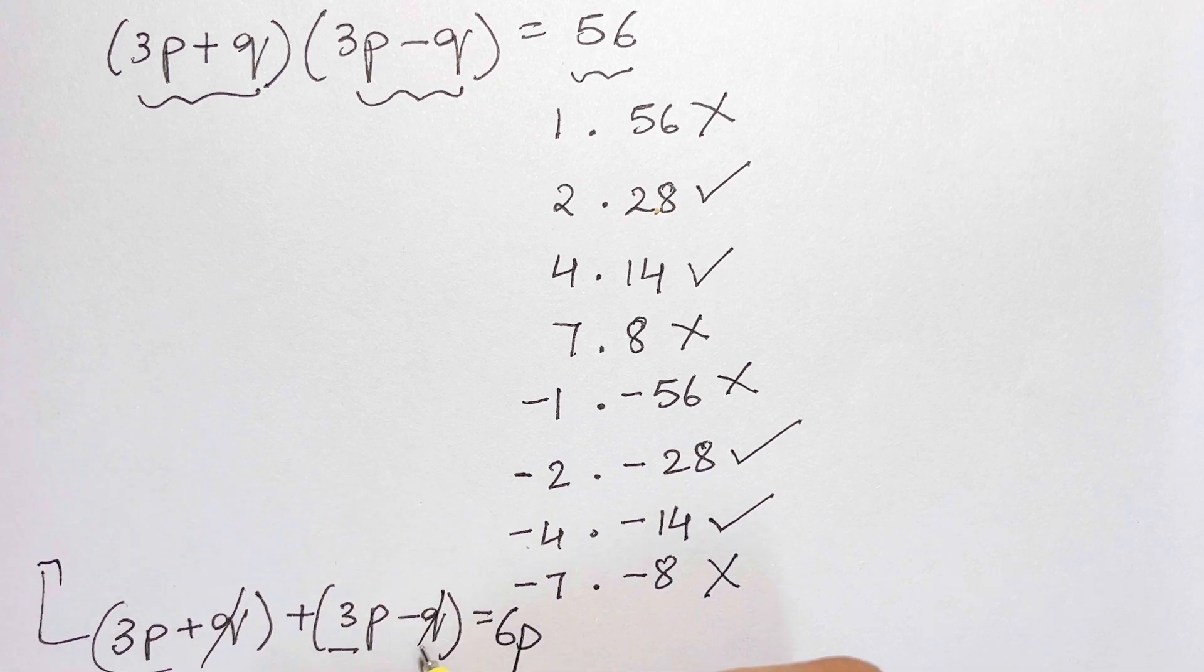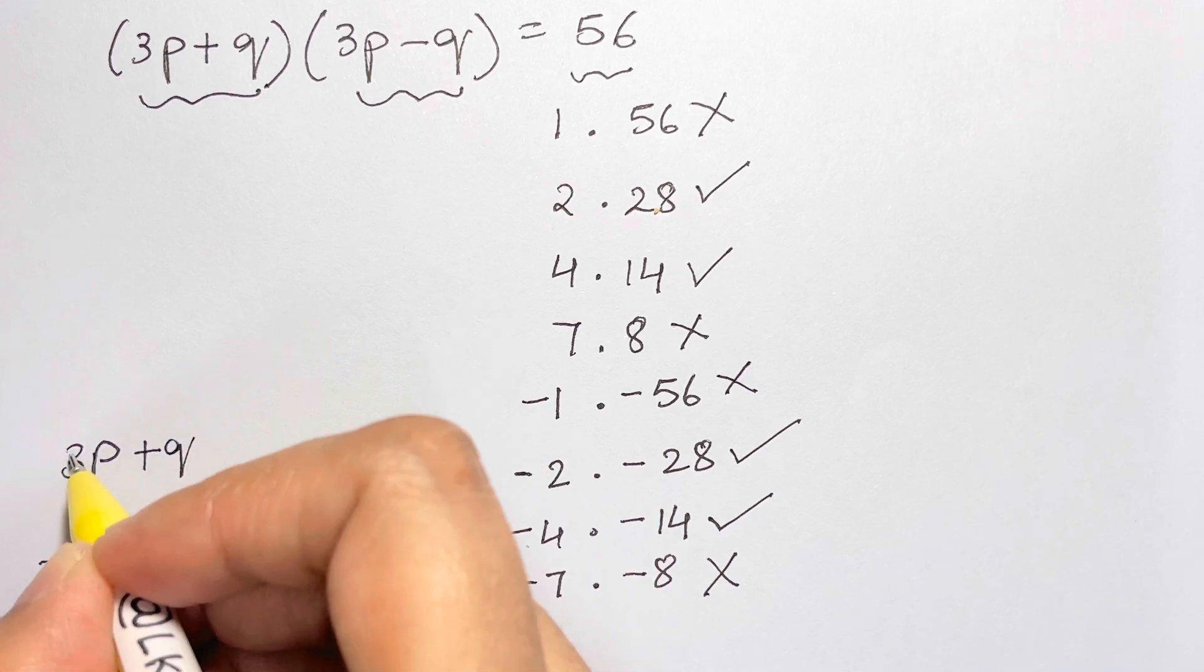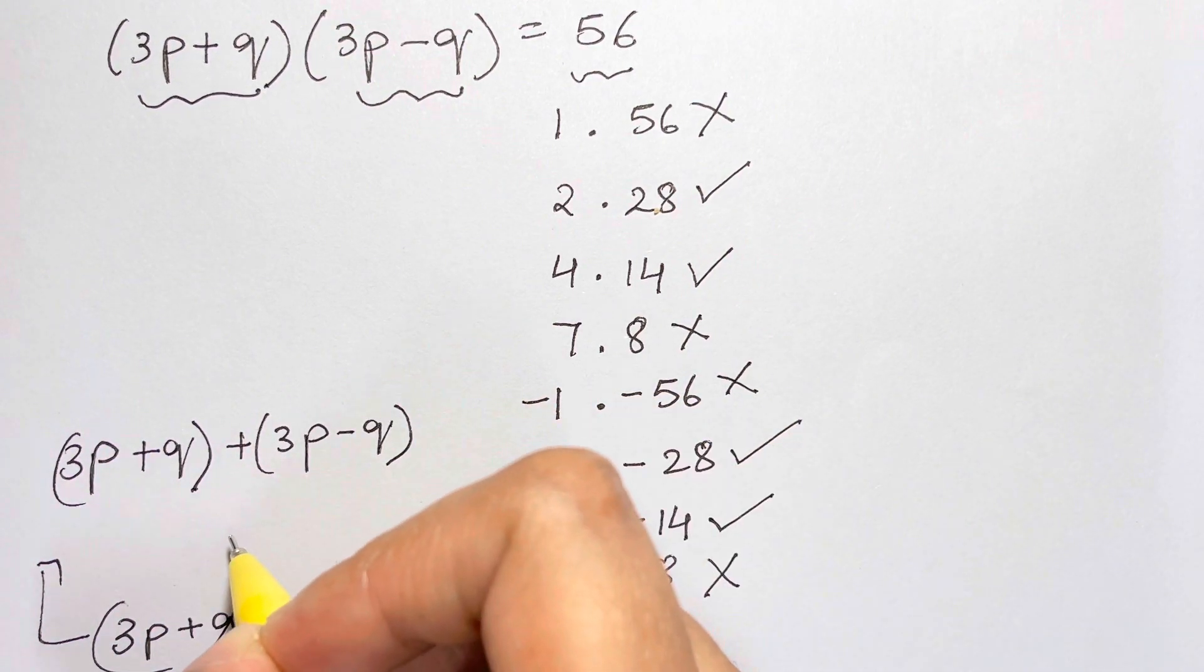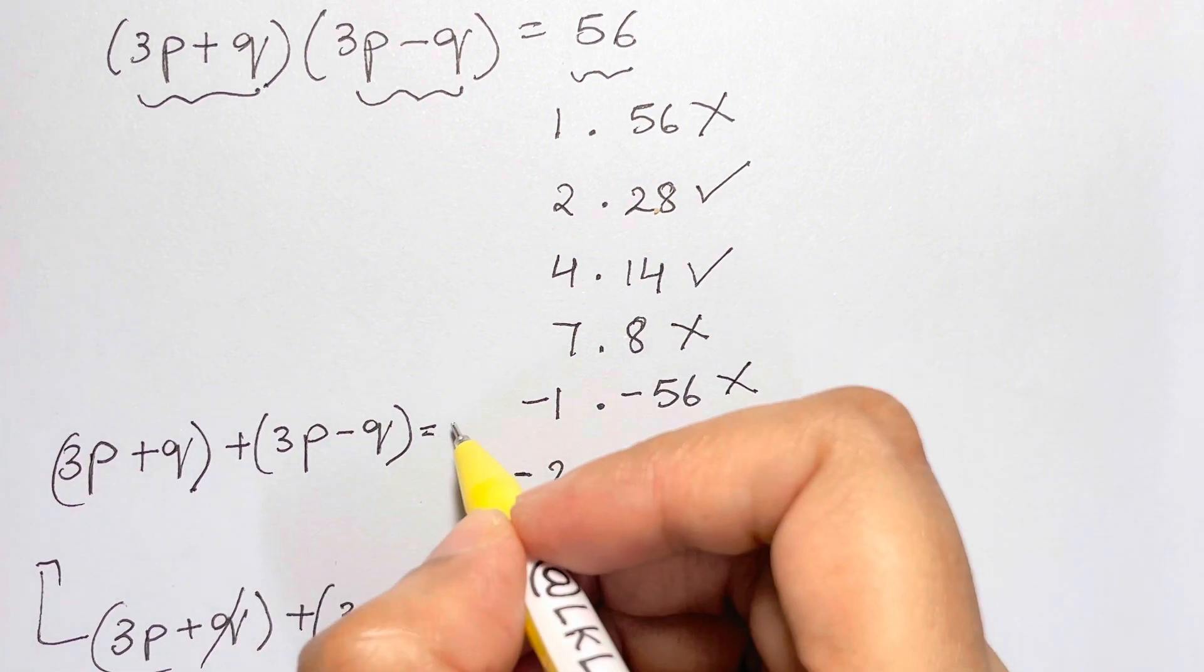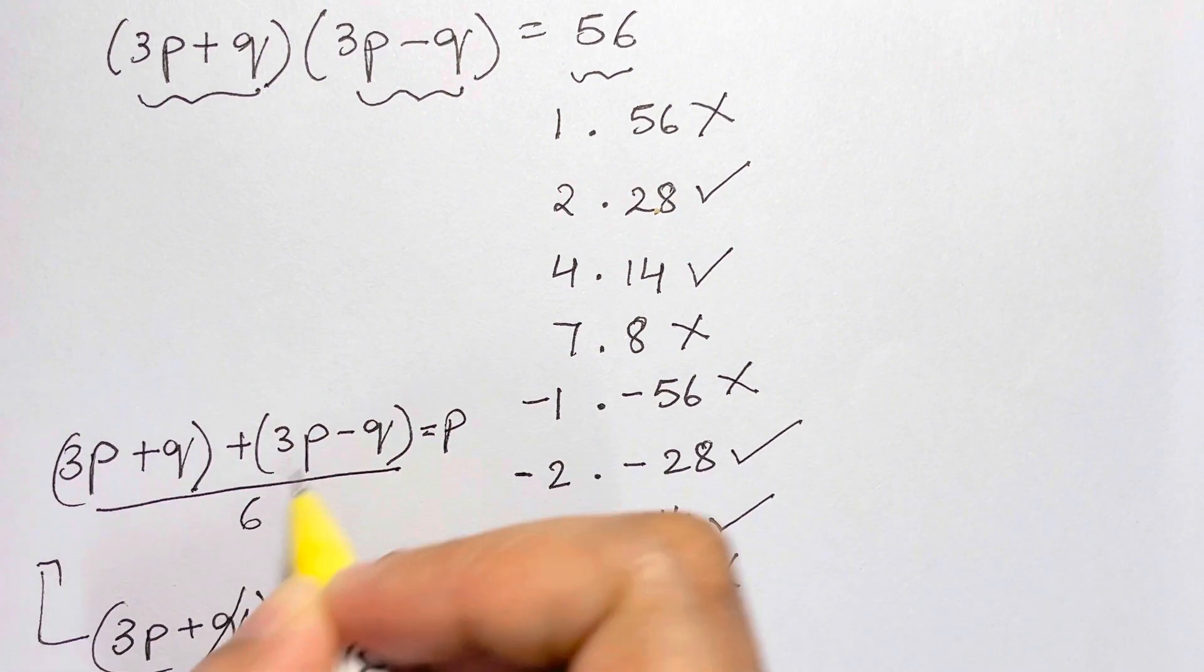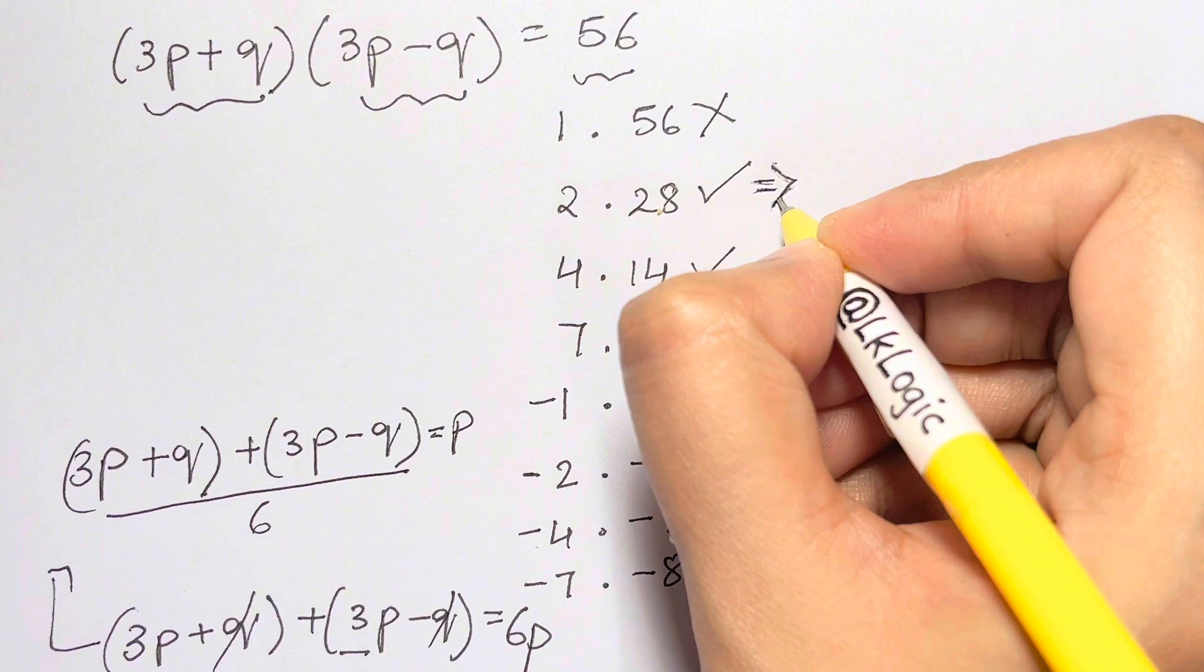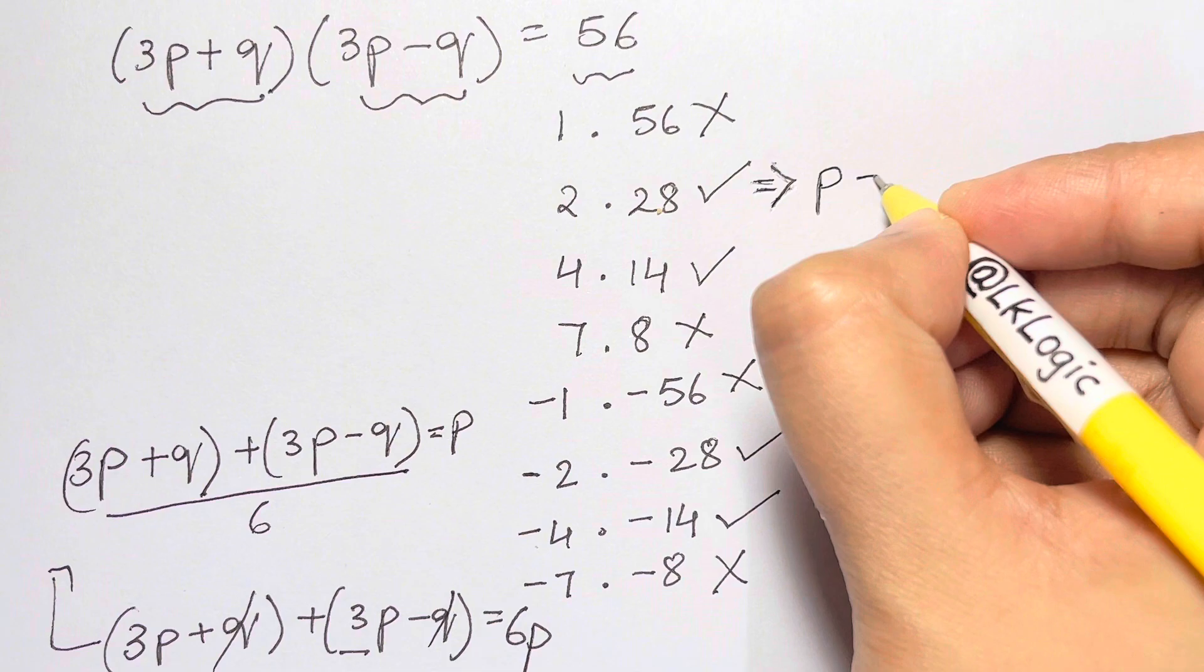So from here, (3p + q) + (3p - q) = 6p. Divide the sum of the two integers by 6 to get the value of p. From 2 + 28 = 30, we get 30 ÷ 6 = 5, so p = 5. From 14 + 4 = 18, we get 18 ÷ 6 = 3.